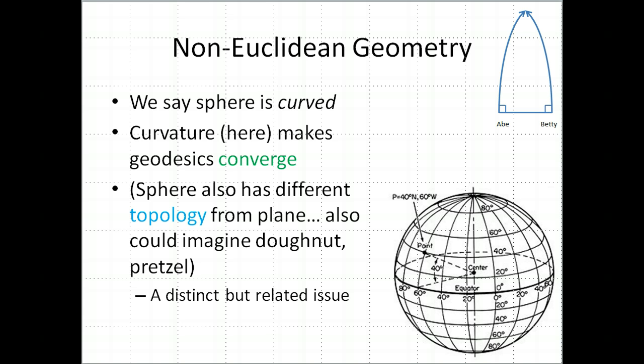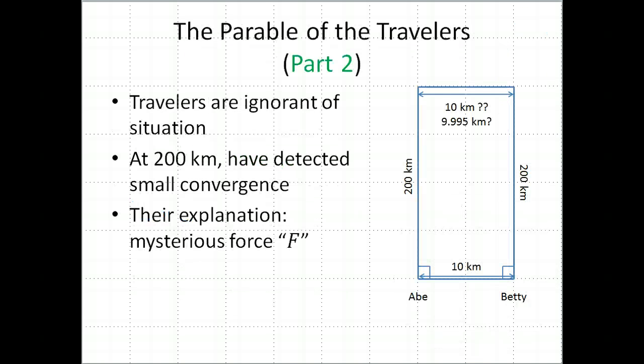Let me finish the parable of the travelers and then we'll switch to a new video. Part two of the parable of the travelers. Let's say the travelers are totally ignorant of the fact that they're on a curved surface. They're still mystified by this. Let's go back to where they've only gone 200 kilometers. They haven't even gone to the point where they hit each other. They start out 10 kilometers apart. After 200 kilometers of travel, they're slightly closer to each other.